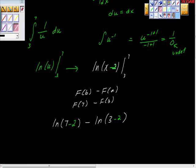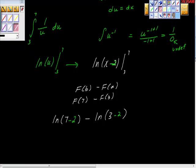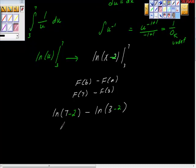And look at this for a second. We get ln of 7 minus 2 is ln of 5. So we have ln of 5 minus ln of 1.